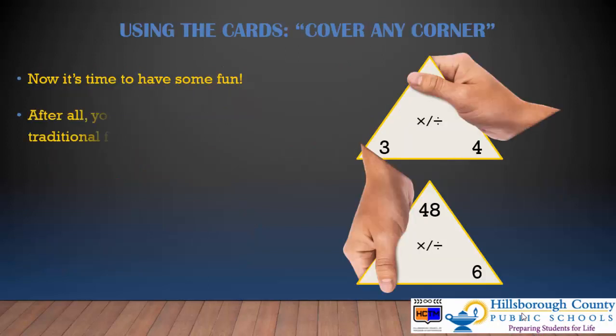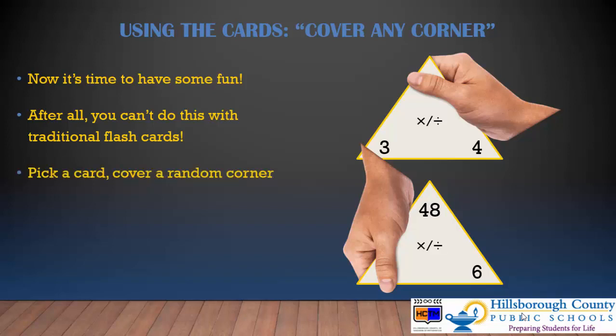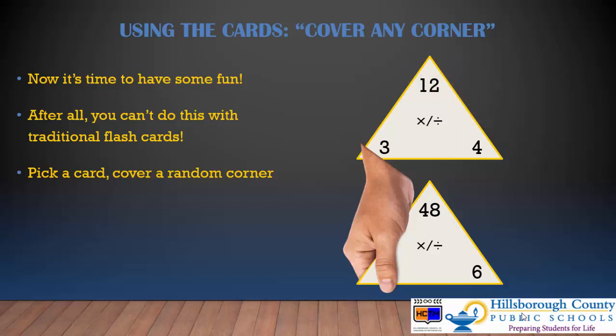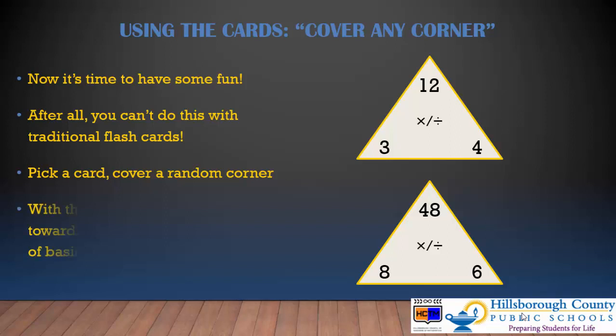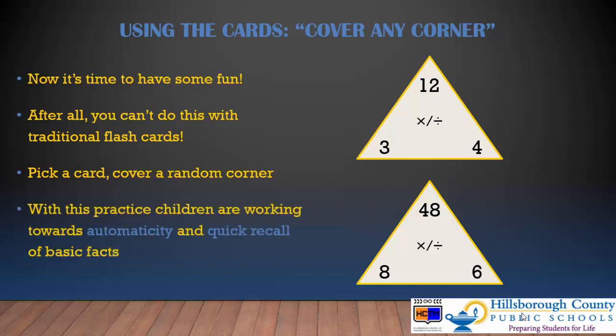Now it's time to really have some fun — after all, you cannot do this with traditional fact flashcards. Pick a card and cover any corner. Students use whatever knowledge — multiplication, division, or the relation between those — to figure out what the missing number is. So maybe 3 times 4 or 4 times 3 gives me 12. In our example below, I could think 48 divided by 6, or I could think how many groups of 6 make 48, to find the missing factor of 8. With this practice, children are working towards their automaticity and quick recall of basic facts.